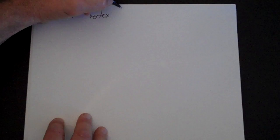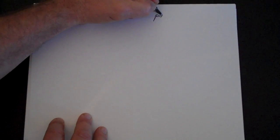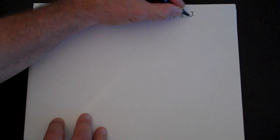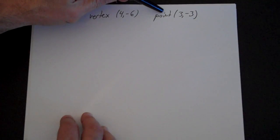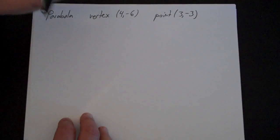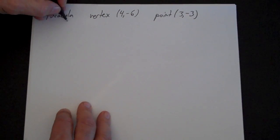So as a first example, let's say you have a parabola and the vertex is the point (4, -6) and another point is (3, -3). Now it turns out it doesn't matter which other point you have. If you have the vertex and any point, you can always write the equation of a parabola.